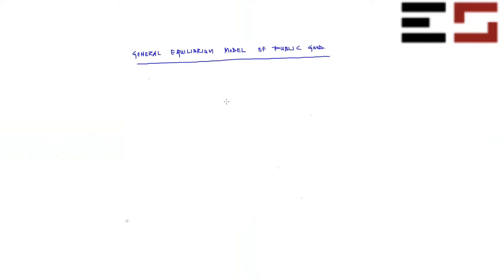So if you recall, a public good is a good which satisfies these two properties: it's non-rival and it's non-excludable.